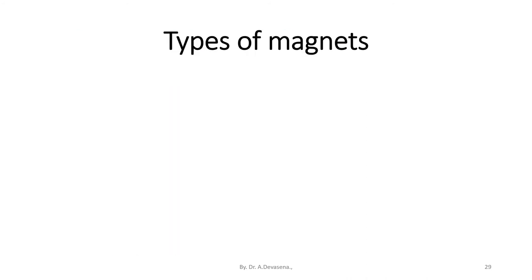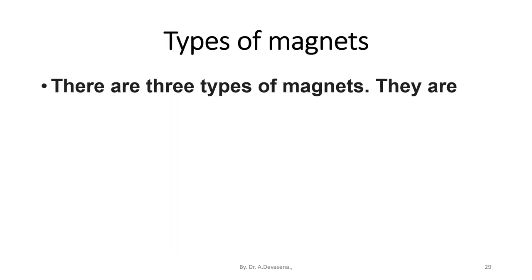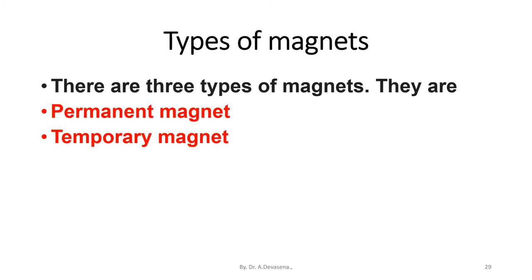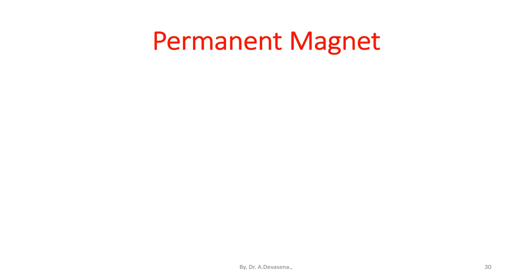There are three types of magnets: permanent magnet, temporary magnet, and electromagnet. Here is a representation of a permanent magnet.